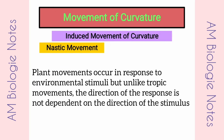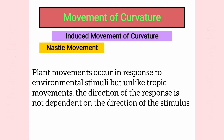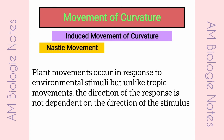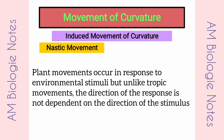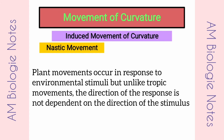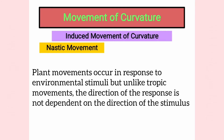Nastic movements are plant movements that occur in response to environmental stimuli, but unlike tropic movements, the direction of the response is not dependent on the direction of the stimulus. It may be of different types.